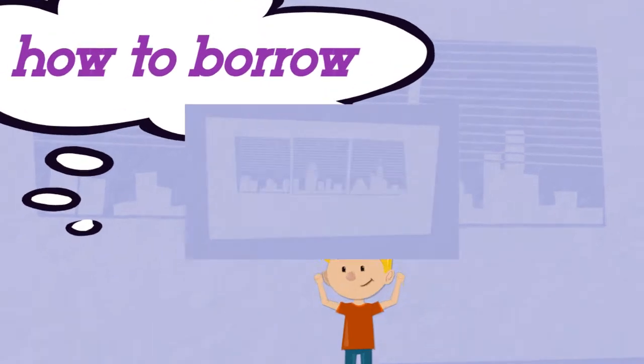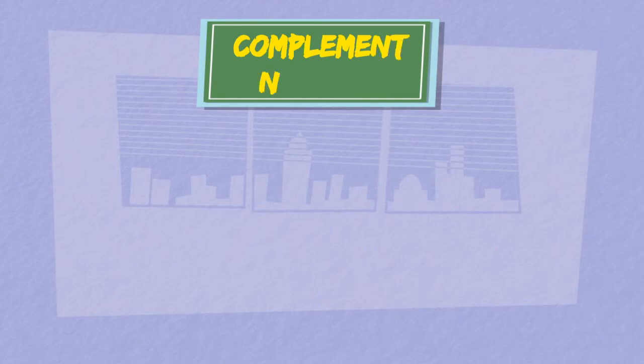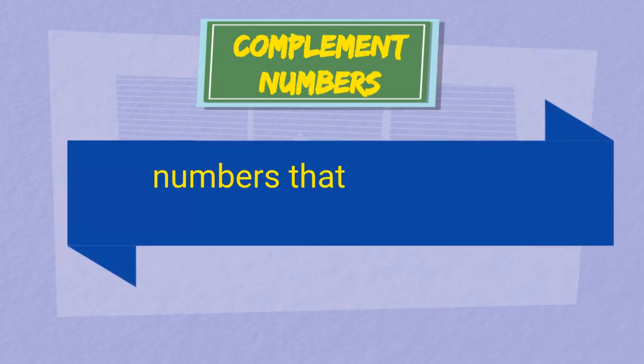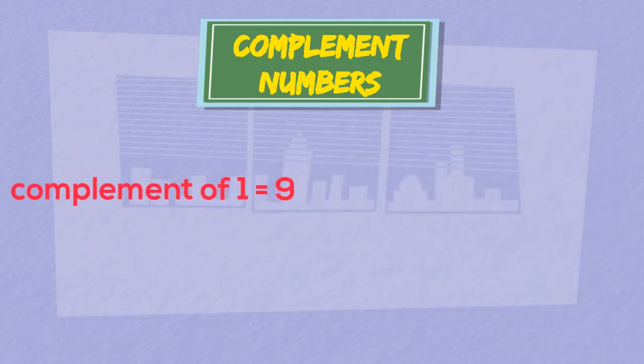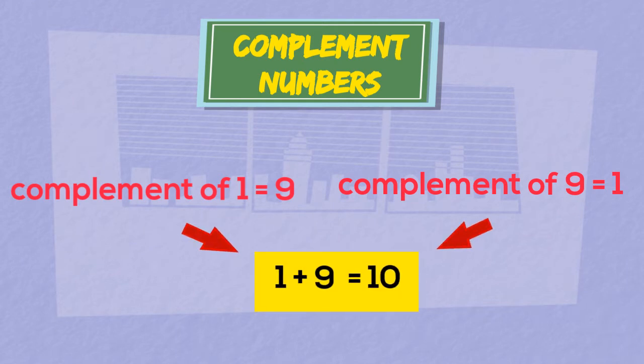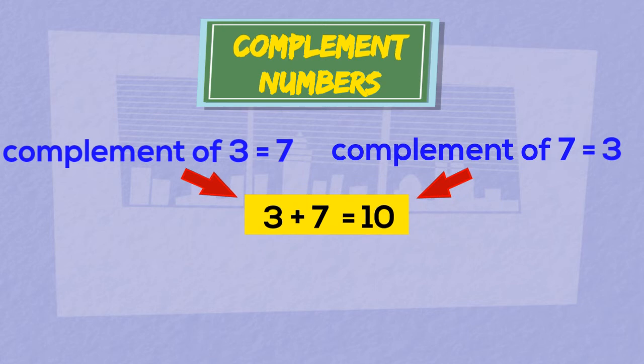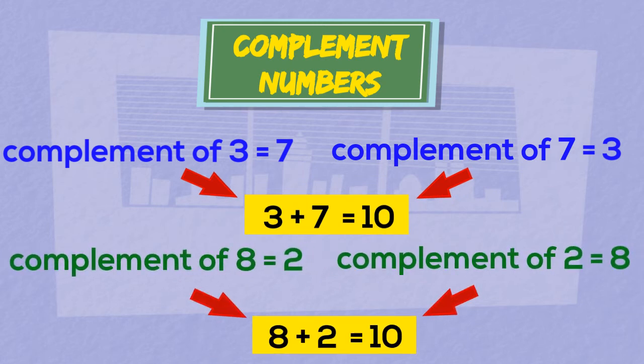For that we need to know the complement numbers, that is the numbers to add to make 10. Like the complement of 1 is 9 and vice versa. As 1 plus 9 makes 10, complement of 3 is 7, complement of 8 is 2 and so on.